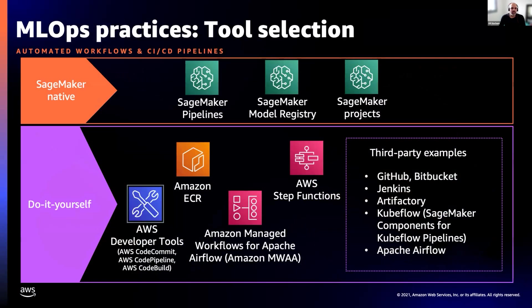Here's a quick look at some of the services you could use to build automated workflows and CI/CD pipelines for machine learning. At the top, you can see SageMaker native services — pipeline, model registry, and projects — which we'll do a deep dive on today. At the bottom are do-it-yourself tools: traditional CI/CD tools, some AWS, and some third parties like Airflow, Kubeflow, and Jenkins.